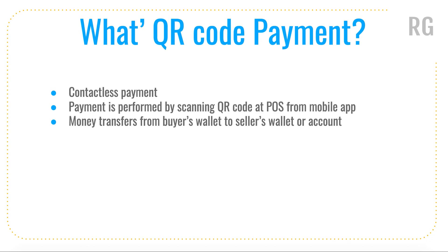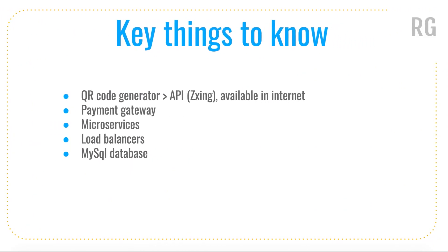It is essentially money transferring from the buyer's wallet to the seller's wallet or any account. Before going into the system design detail, you should know what a QR code generator is, what a payment gateway is, microservices, load balancers, and the MySQL database. A QR code generator is a set of software APIs that converts text into a QR code or converts a QR code back into text. The most popular one is ZXing, done by Google, and it is available on the internet.